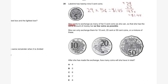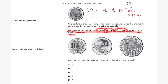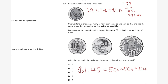To make $1.45 with as few coins as possible: use two 50 cent coins — that's $1.00. Then two 20 cent coins — that's 40 cents more, making $1.40. She must keep one 5 cent coin because that's the smallest coin available to make up the remaining 5 cents. So she ends up with two 50 cent coins, two 20 cent coins, and one 5 cent coin — five coins in total. The answer to question 20 is B, 5.